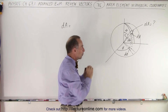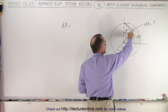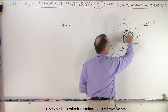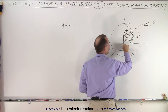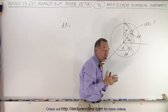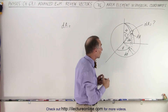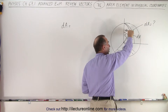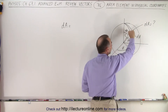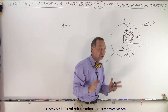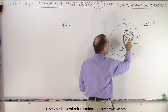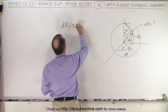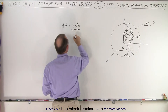So how do we define that rectangle? Notice that the length in this direction can be found by simply taking the distance r, which is the distance from the origin to the surface of the sphere — the magnitude of the r vector. If we multiply that times the arc length, the small change in angle theta, we can call that dθ. So the length in this direction can be called r times dθ.